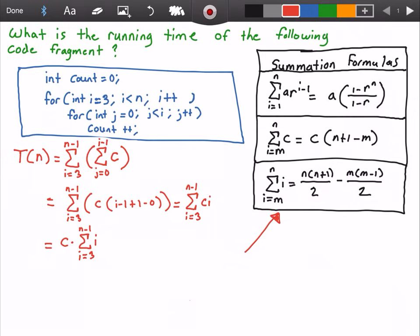And now we can use this summation formula here at the bottom to solve for this. So this is equal to C times n minus one times n minus one plus one divided by two. And then I make sure I use my parentheses here, and then make sure I use my parentheses here. Three times three minus one, all of that divided by two.